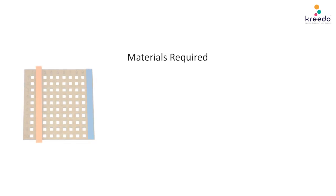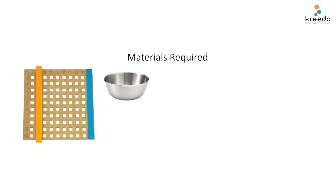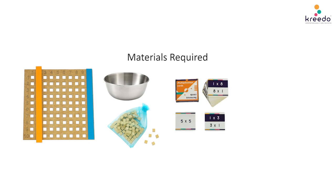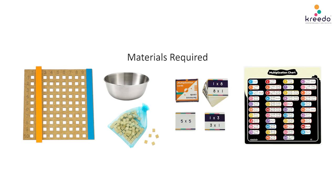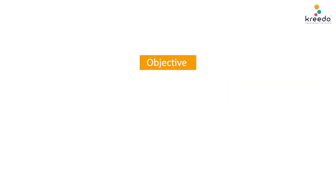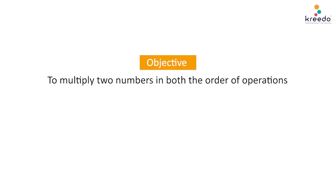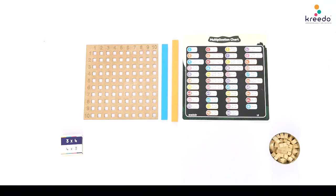Materials required: multiplication board, ball, unit cubes, multiplication cards, multiplication fact chart. Objective: to multiply two numbers in both orders of operations.